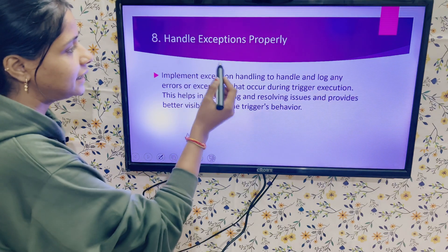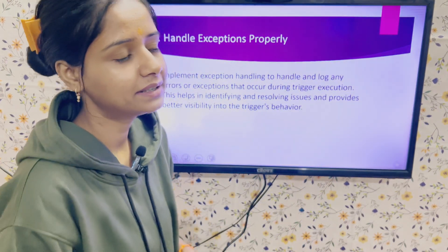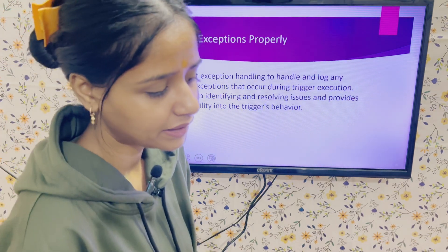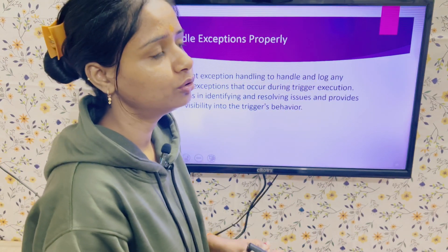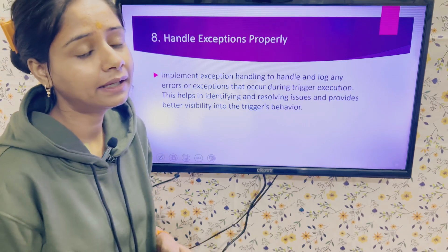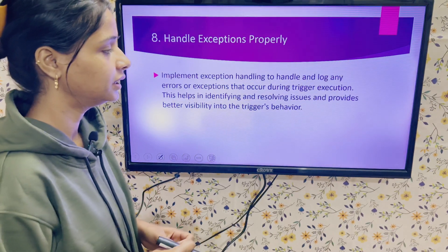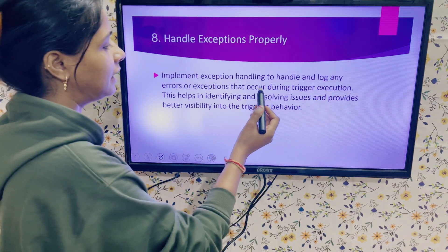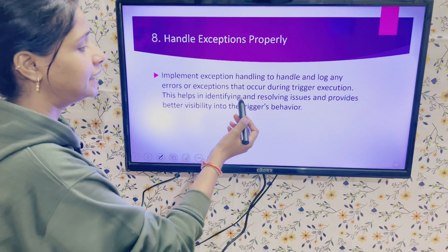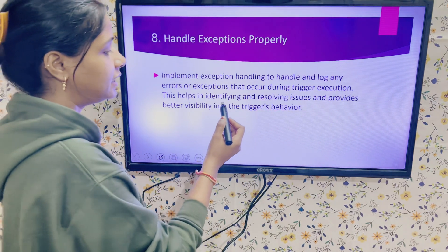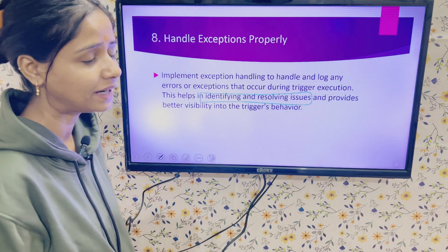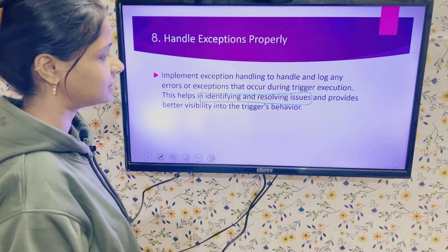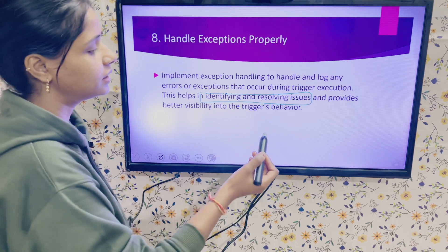The next point is to handle exceptions properly. Using try-catch is the way to handle exceptions, so it is better to always use try-catch in your logic. Whenever you face any issues, it will give you the exact reason and save time in debugging or resolving problems. Implement exception handling to log any errors or exceptions that occur during trigger execution. This helps identify and resolve issues and provides better visibility into the trigger's behavior.